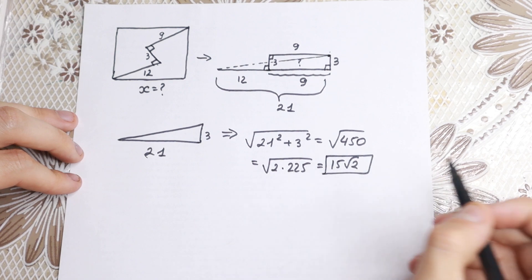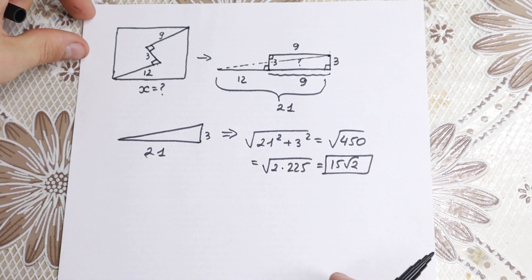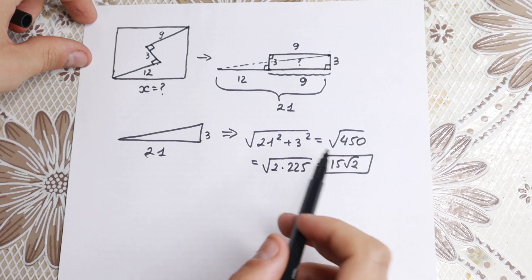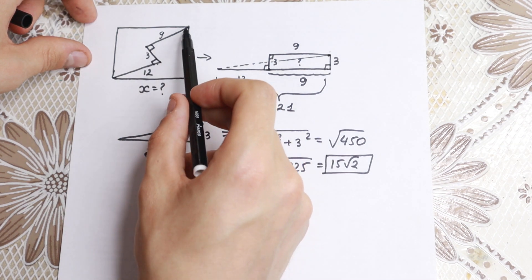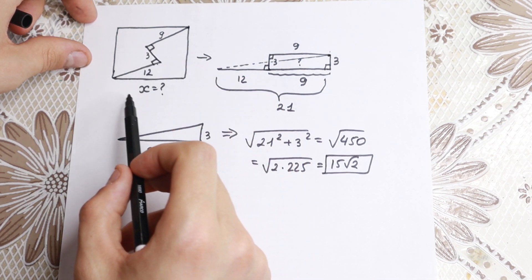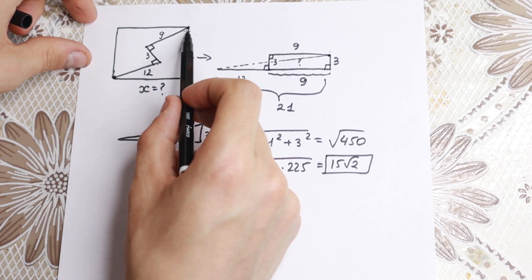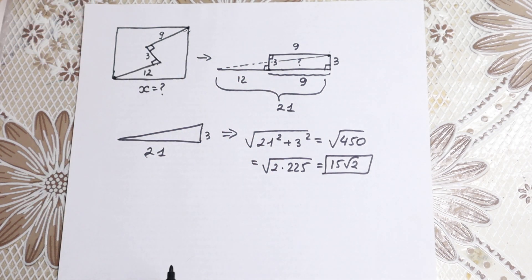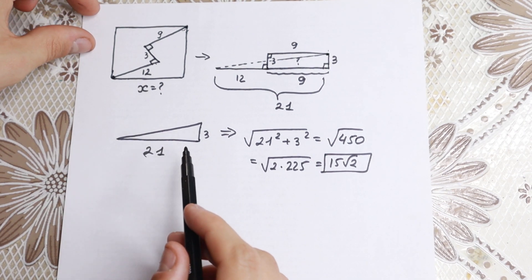But how does this help us find our x? Because what we found — 15√2 — is the diagonal of the square. If we connect this point and this point, we find the diagonal of our square. But how can we find our side, our x?